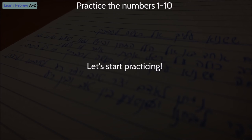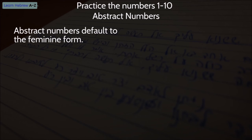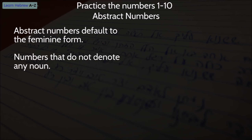Now for practicing. We will start with abstract numbers. In Hebrew, abstract numbers default to the feminine separate form. We use abstract numbers when we use numbers that do not denote any noun. One example is in math — we say 5 plus 5. Another example is when we count 1, 2, 3, 4, etc.